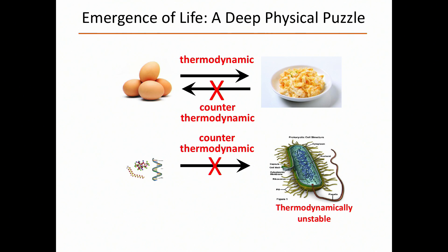Going the other way is very easy — we are all good at turning living things into dead things. Just take that thing, pull it apart, and you've got your building blocks. That's called death. That process has a name. But the counter-thermodynamic path — that's the big challenge. How did that happen?